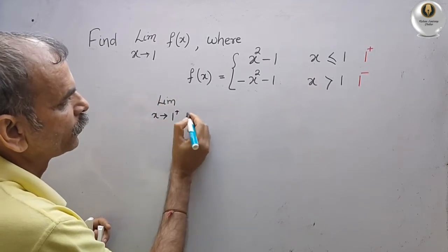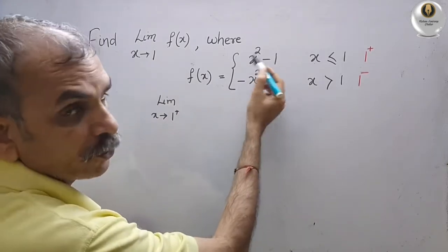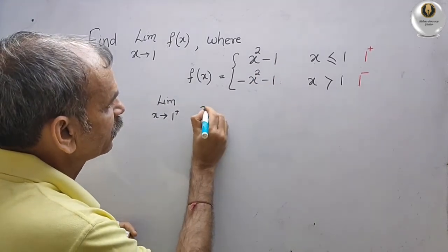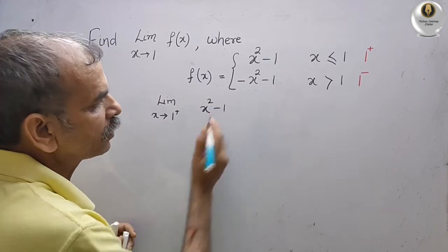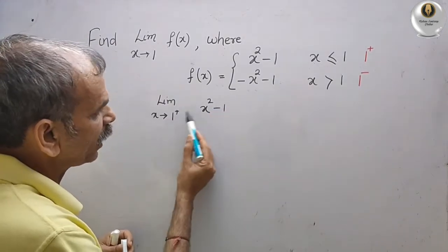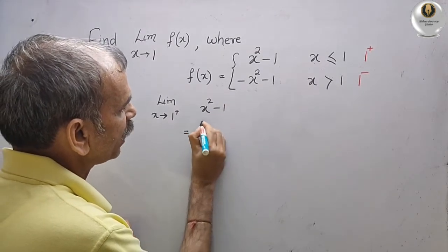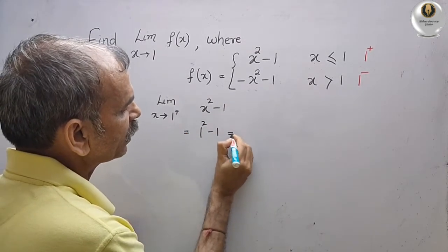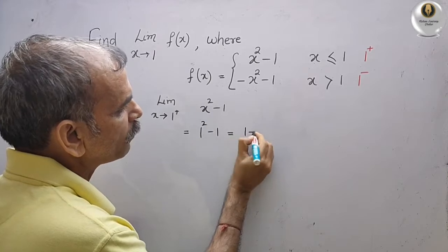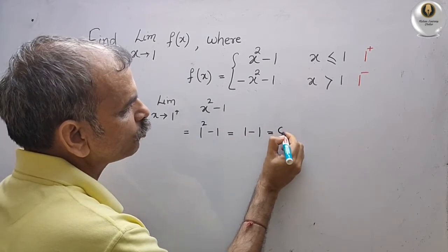Now we will take these two conditions. Limit x tends to 1 plus, we have to take this value, that means x squared minus 1. Now substitute 1 here.